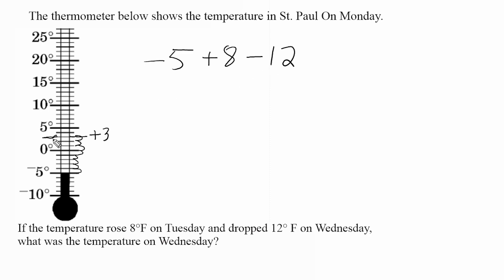So let us drop one, two, three, four, five, six, seven, eight, nine, ten, eleven, twelve, and that puts us at negative nine degrees. So we would say that the temperature on Wednesday is negative nine degrees, or nine degrees below zero.